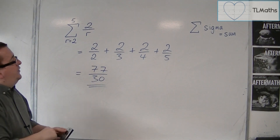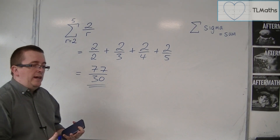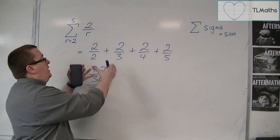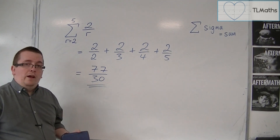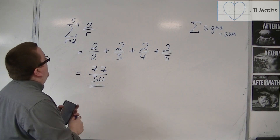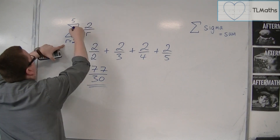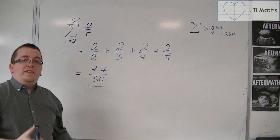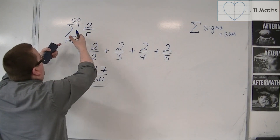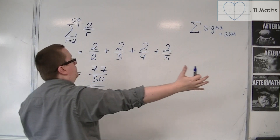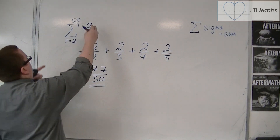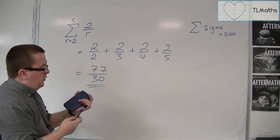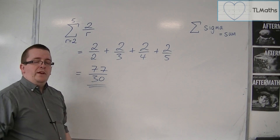So effectively, sigma notation is a shorthand that allows me to write down sums without having to expand them all out. In other words, I can change these numbers to be whatever I like — so I could change this from 2 to 500, for example — without having to write out every term and adding them all together. It's a nice, succinct shorthand notation that we can use to represent a sum.